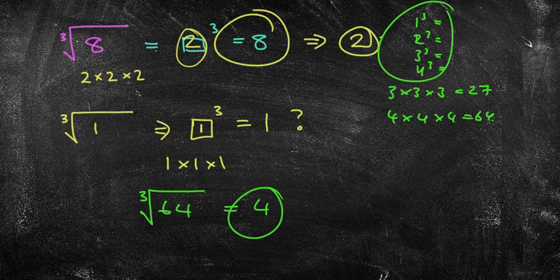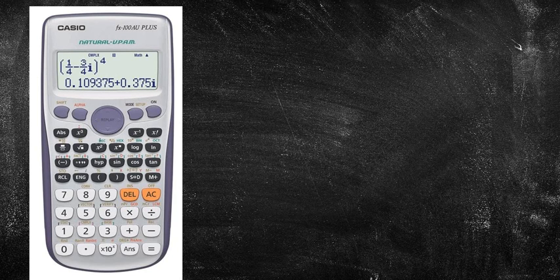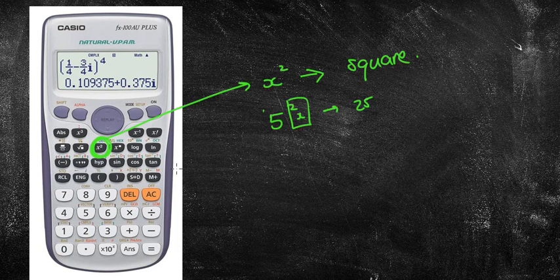Let me show you where the buttons are on your calculator — I'll use an image since my emulator isn't working. You'll see a button labelled x squared — that's the square button. To do 5 squared, press 5 then the x squared button, and you'll get 25. For cubed, diagonally to the left of it you'll see the x cubed button. Press 5 then x cubed and you'll get 125. Those are the two main buttons for squares and cubes.